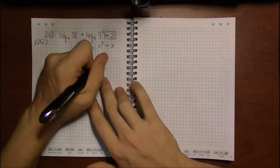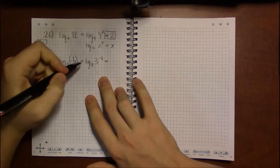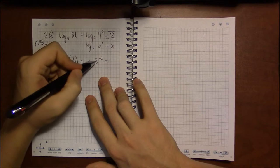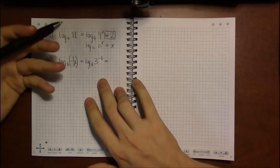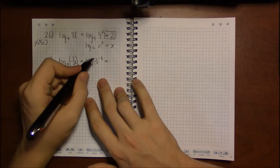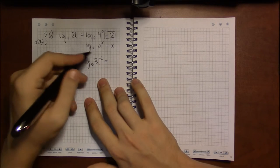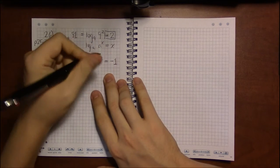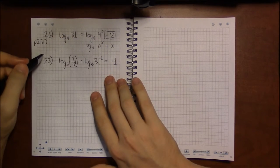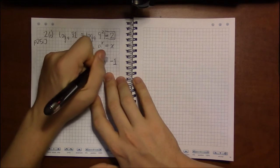And when it's written like this, I can now say, hey, log base 3 and 3 to whatever, they're inverses. They cancel out, like addition and subtraction. They have the effect of nullifying each other and just leaving me with whatever was in the exponent. In this case, a minus 1.